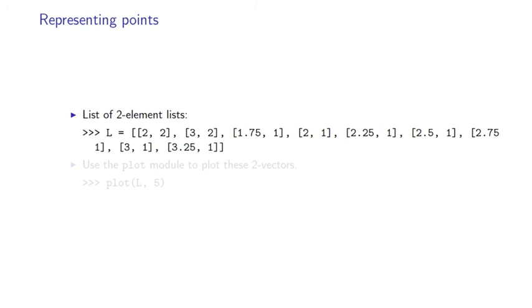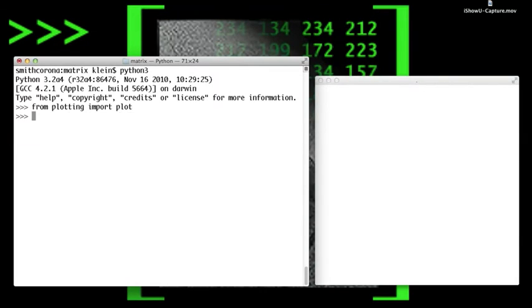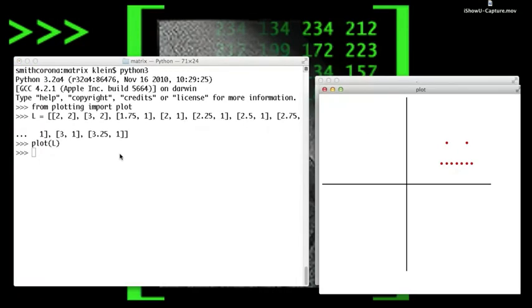Let's try this in Python. Let's start with a list of vectors represented as lists of length 2. We can plot these using the same module we used to plot complex numbers.